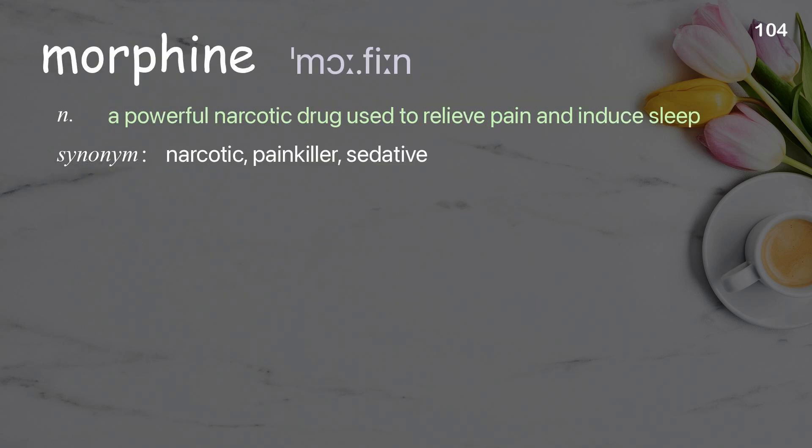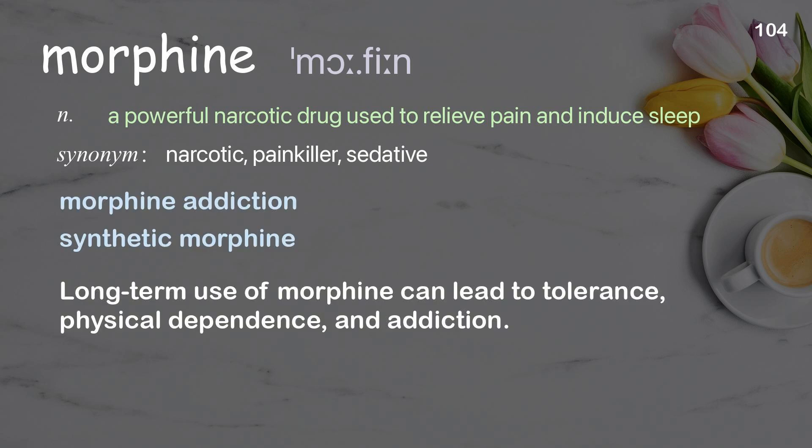Morphine: a powerful narcotic drug used to relieve pain and induce sleep. Examples: morphine addiction, synthetic morphine. Long-term use of morphine can lead to tolerance, physical dependence, and addiction.